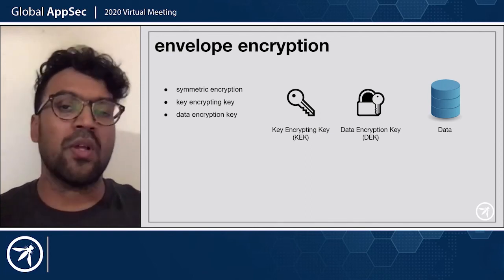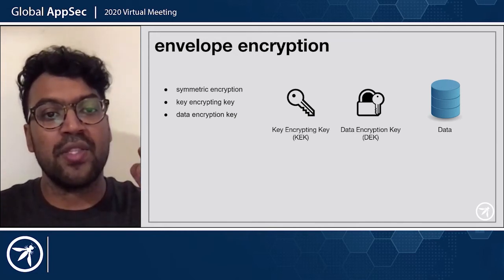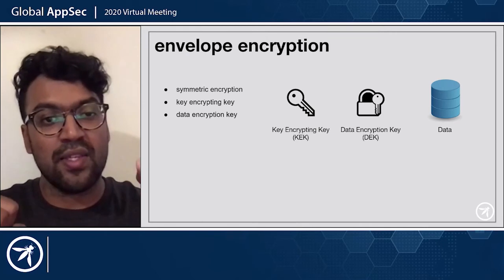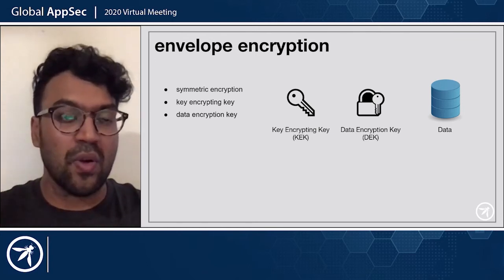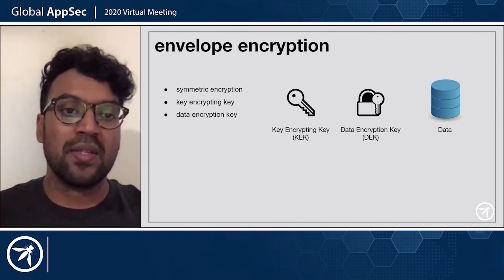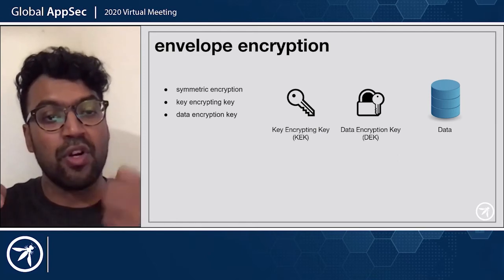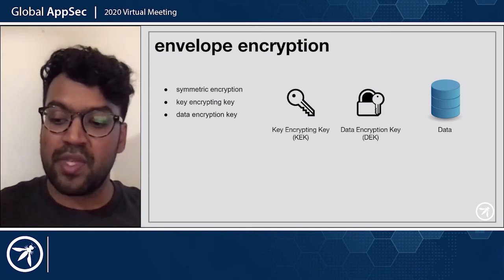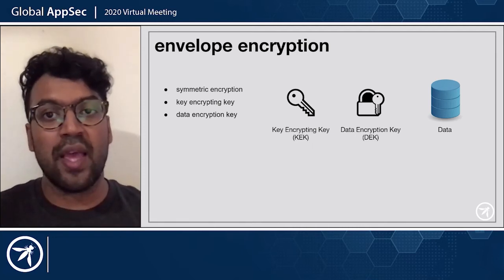For those not familiar with envelope encryption: we have a master key, also called a KEK (key-encrypting key). We have this main key that then generates an ephemeral key, which we'll call a DEK. The KEK is used to protect the DEK by encrypting it, and the DEK is used to encrypt your plain text. So to recap: the DEK encrypts your plain text, and the KEK encrypts your DEK. You then take your encrypted ciphertext and your encrypted DEK and store them in your database. On the flip side, when we go to decrypt the data, if all that information lives in the ciphertext, we can parse it and then decrypt the data.